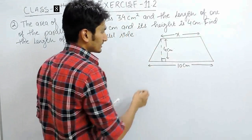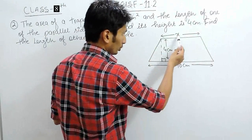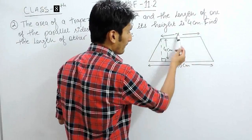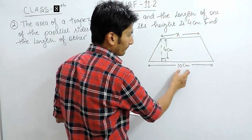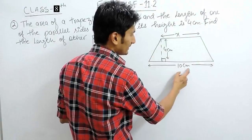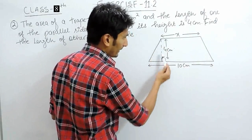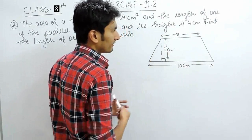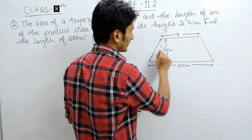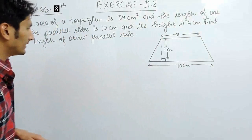We know that a trapezium is a quadrilateral — a four-sided closed figure — whose two sides are parallel. One of the parallel sides is given as 10 cm and the height, which is the perpendicular distance between these two parallel lines, is given as 4 cm. You have to find the other parallel side.